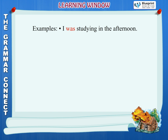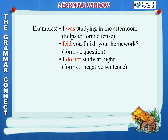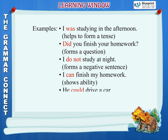Examples: I was studying in the afternoon. (Helps to form a tense.) Did you finish your homework? (Forms a question.) I do not study at night. (Forms a negative sentence.) I can finish my homework. (Shows ability.) He could drive a car. (Shows possibility.)